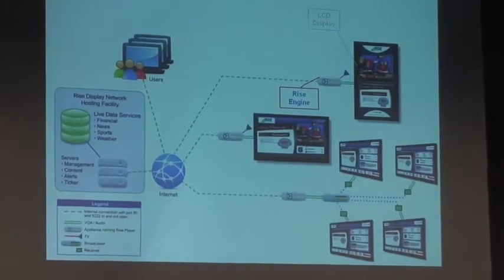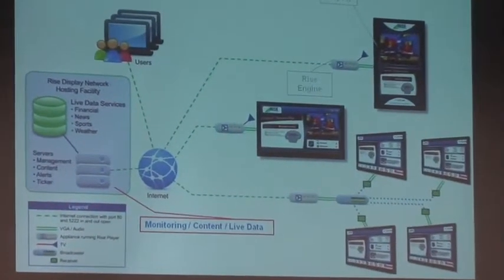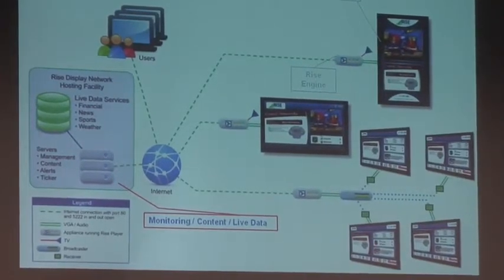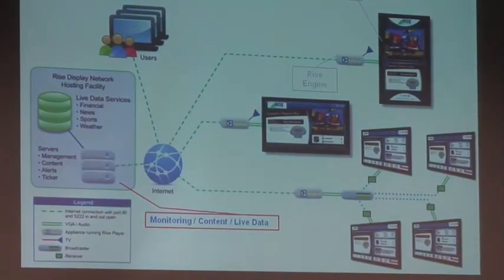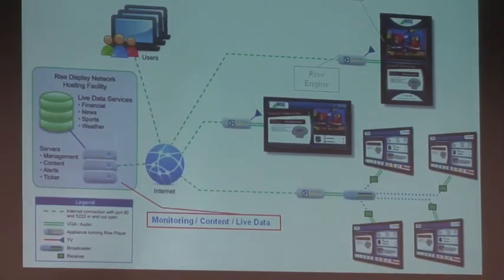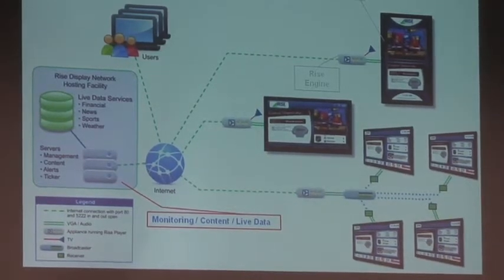Here's how it works. The web-based part is how we actually get the content there. You have your LCD display, and the Rise Engine media player — an XP-based computer — takes the content from the web. You monitor your content and live data via the Rise Display Network, or DisplayWire. The servers manage your content, alerts, and any ticker information, which is the scrolling text available at the very bottom of the screen.